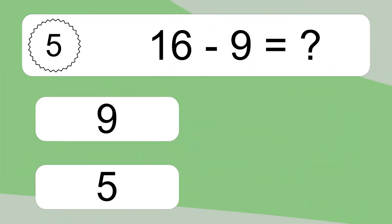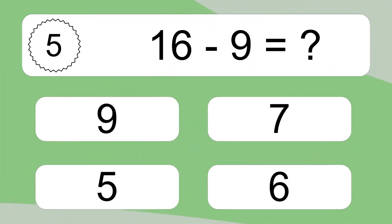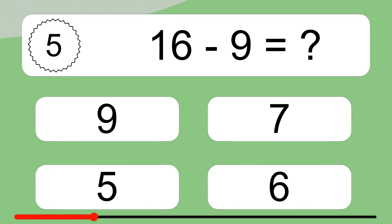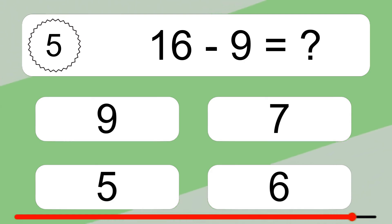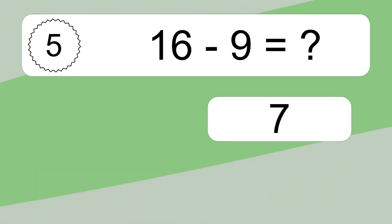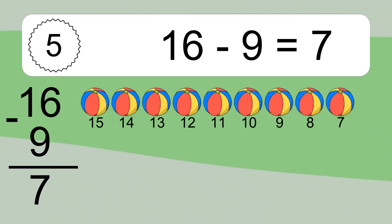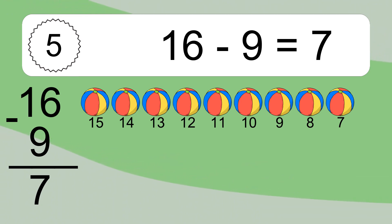16 minus 9 equals what? 16 minus 9 equals 7. Let's count it: 15, 14, 13, 12, 11, 10, 9, 8, 7.